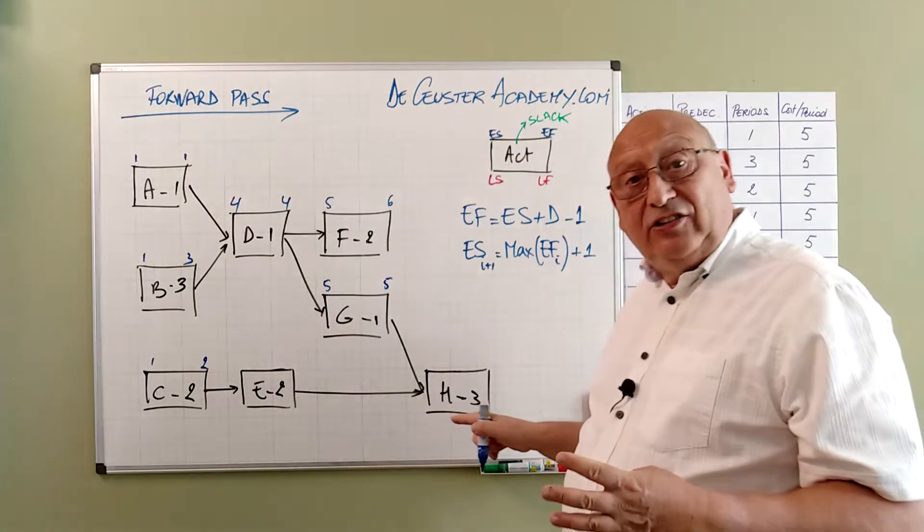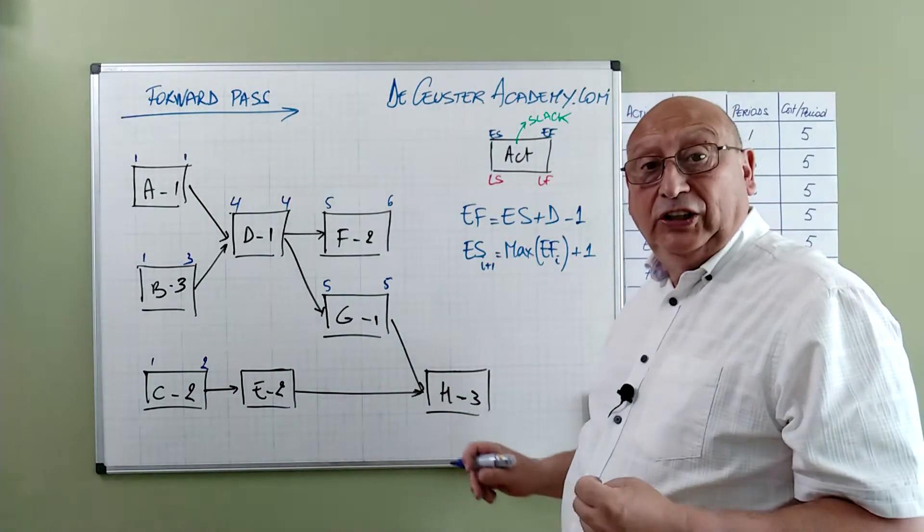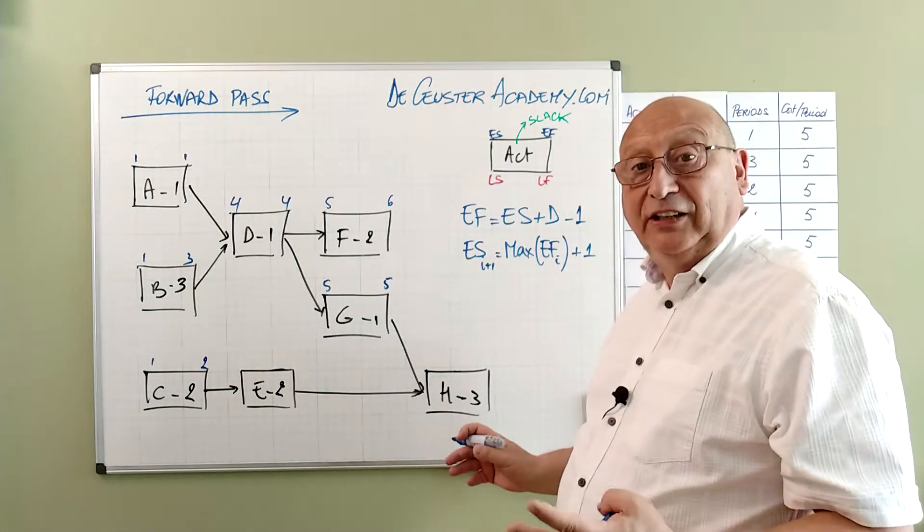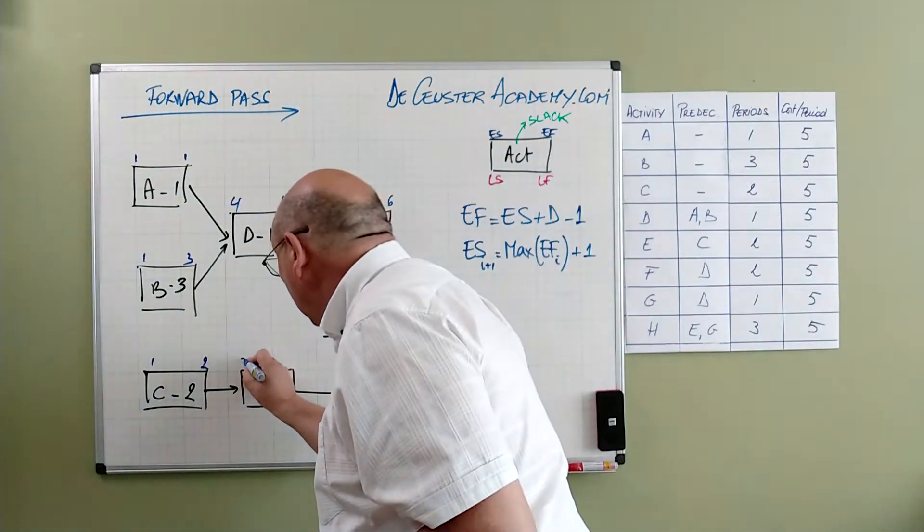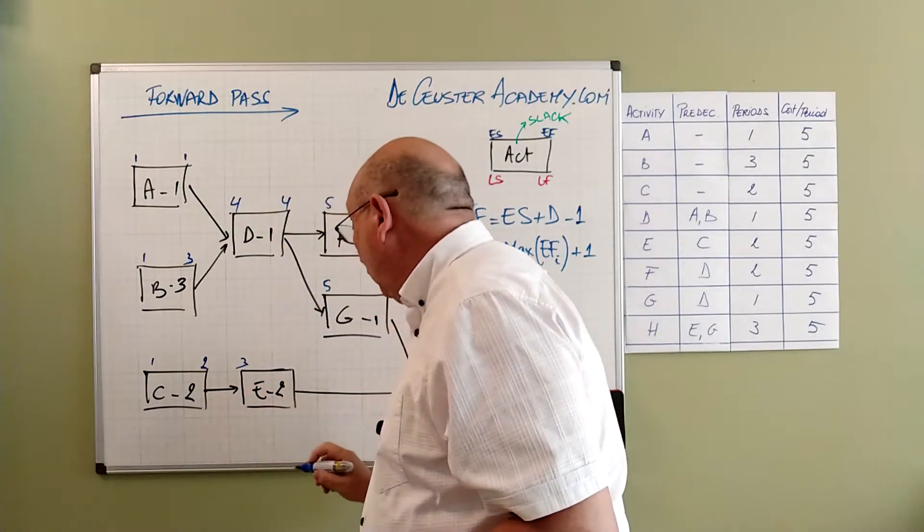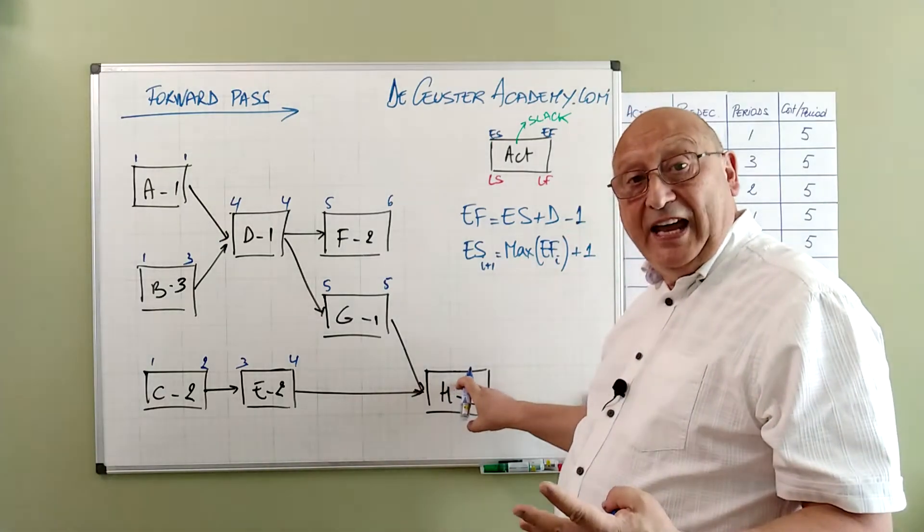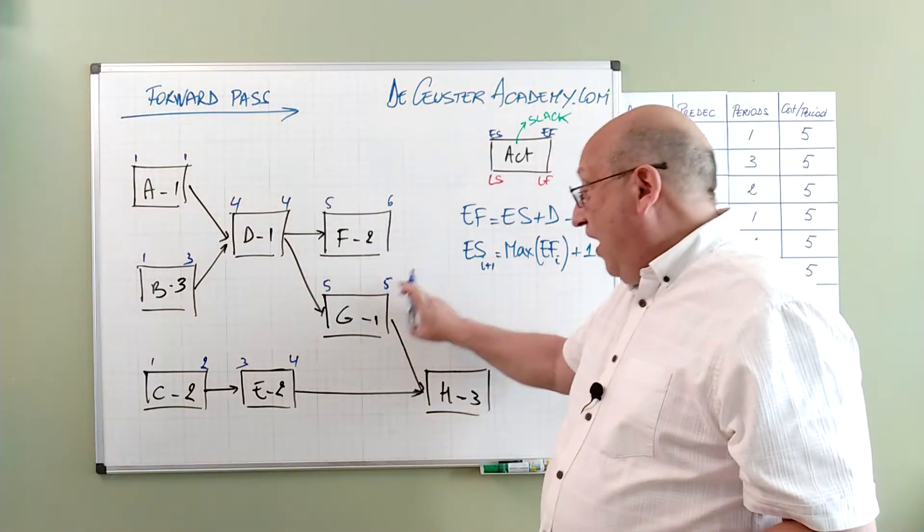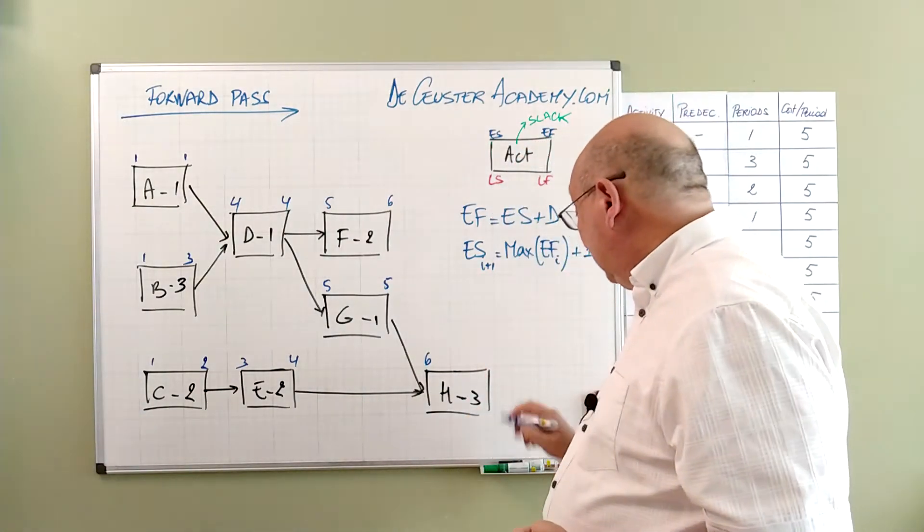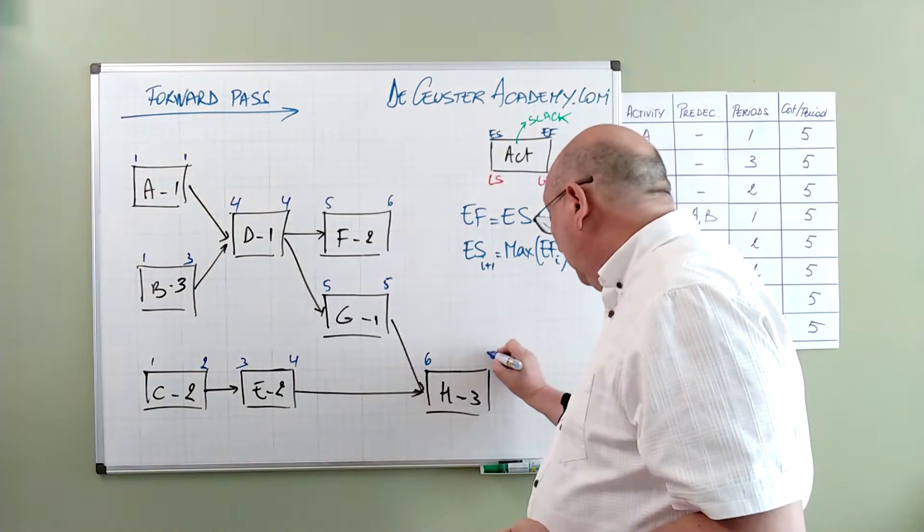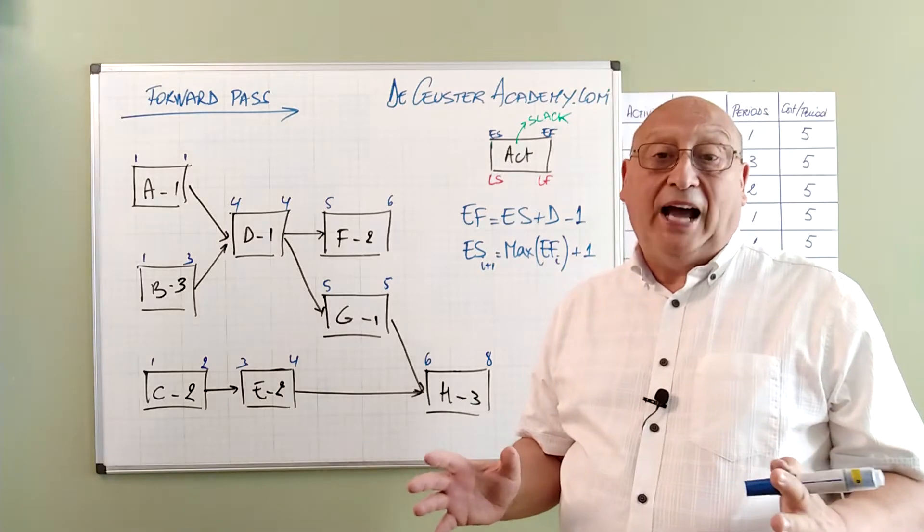H I cannot calculate yet because I still have to get the early start and early finish of activity E. Okay, E can start the earliest at period 3. 3 plus 2 minus 1 is 4. So we have here the predecessors of H, F, 5 or 4. So I take 5 plus 1 which gives me 6. 6 plus 3 minus 1 is 8. So this is basically the first calculation that we have.